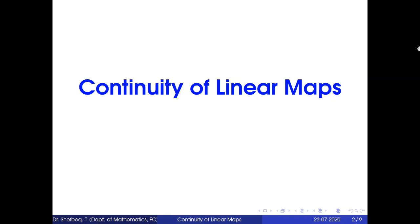Today we will start a new section known as continuity of linear maps. Suppose we have two normed spaces X and Y and a linear map f from X to Y. A natural question arises: whether this linear map f is a continuous function, and if not, under what conditions will it be continuous. We also introduce a norm on the linear space of all continuous linear maps from X to Y, and several examples of continuous and discontinuous linear maps are given.